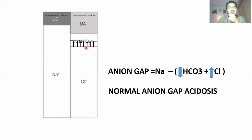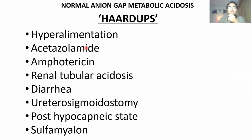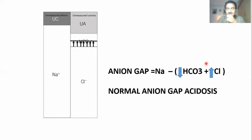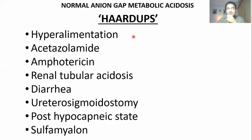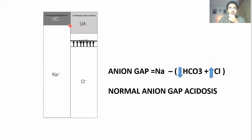If anion gap remains normal, then we cut down our differentials to a few causes. What are those conditions that cause reduction of bicarbonate with an increase in chloride instead of unmeasured anions? We remember them with the mnemonic HARD UPS: Hyperalimentation, Acetazolamide, Amphotericin, Renal tubular acidosis, Diarrhea, Ureterosigmoidostomy, Post-hypocapnic state, Sulfamylon. Details will be posted in the comment section.